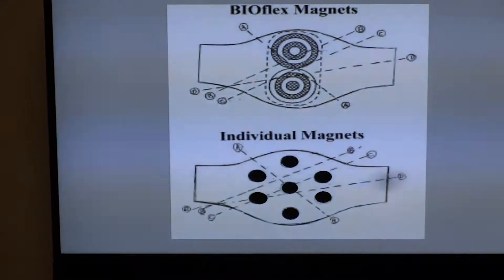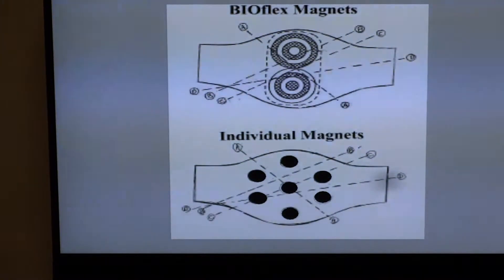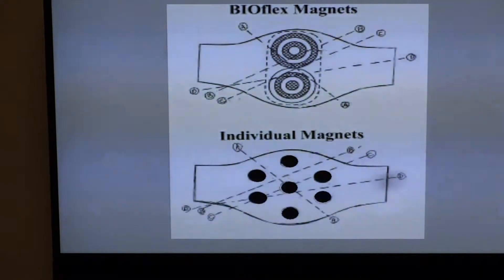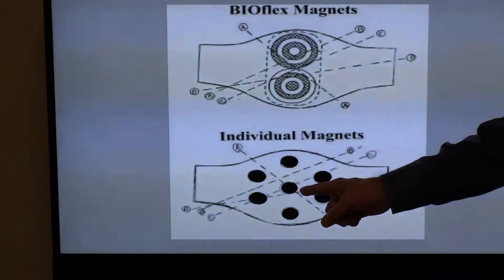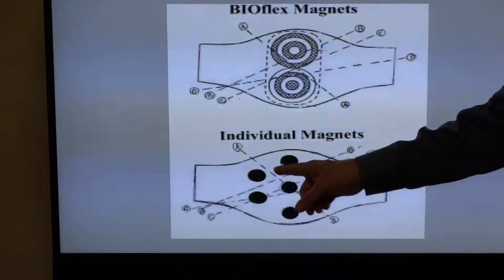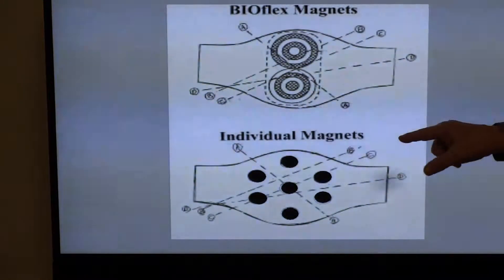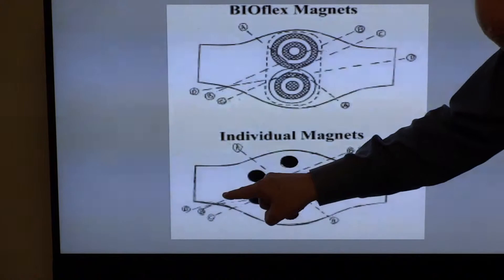Here on the screen, you can visualize the comparison with individual magnets, which have problems. Notice that blood flows through no field, a small field, and then no field. Or worse, through no field at all.